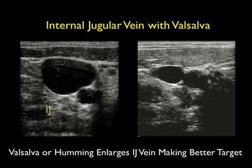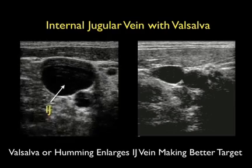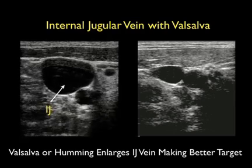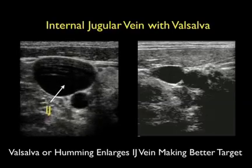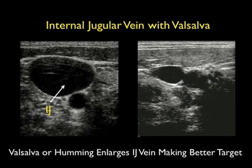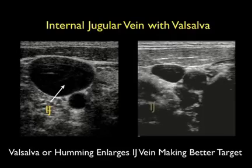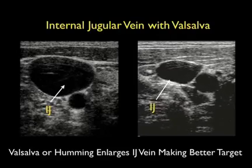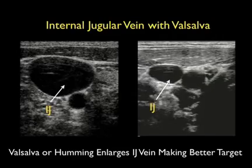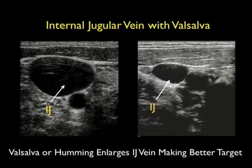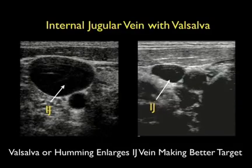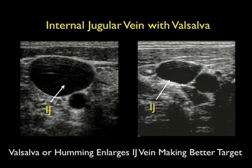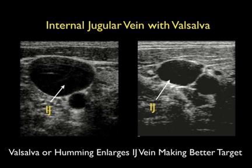One pearl that can be used to further distend the internal jugular vein and make it a better target for cannulation is to have the patient valsalva or hum. Notice in the image to the left the patient is bearing down, and the internal jugular vein becomes much bigger. In the image to the right, note the relatively small caliber of the vein — it becomes much more distended as the patient bears down, making it a much better target for the large cannulation needle.